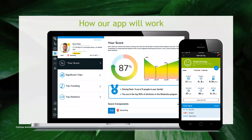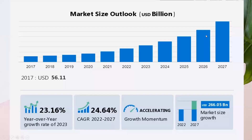The app will work so that both the driver and the owner can see the scores and ratings in terms of driving behavior — how fast they are driving and how those metrics are tracking. Looking at the market size, in 2017 it was 56.1 billion USD and by 2027 it is predicted to reach 266 billion. You can see how fast it is growing, and we are expecting a huge market to sell this solution.